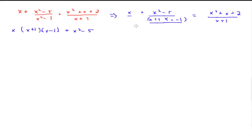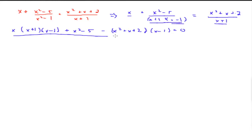I'm going to move this over to the other side, so it's going to be minus the bracket x squared plus x plus 2, multiplied by x minus 1, because we're only missing the x minus 1 factor. So it's going to equal 0, all over the common denominator of x plus 1 and x minus 1.